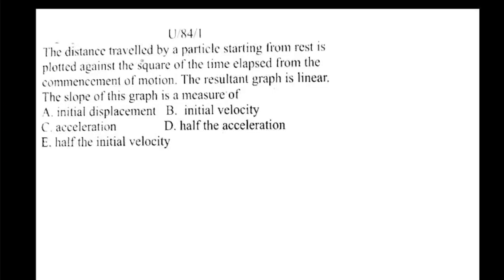The first question we want to consider is from 1984, number 1. The question states that the distance traveled by a particle starting from rest is plotted against the square of the time elapsed from the commencement of motion. The resultant graph is linear. The slope of this graph is a measure of: A) initial displacement, B) initial velocity, C) acceleration, D) half the acceleration, E) half the initial velocity.